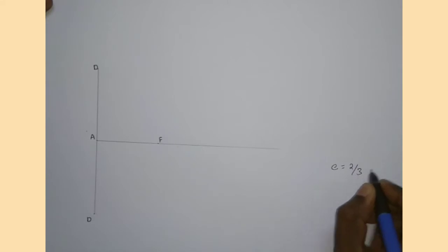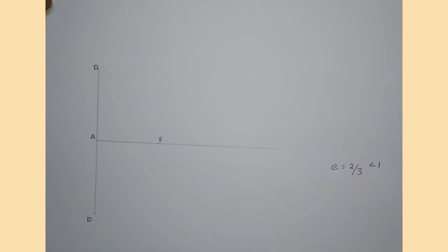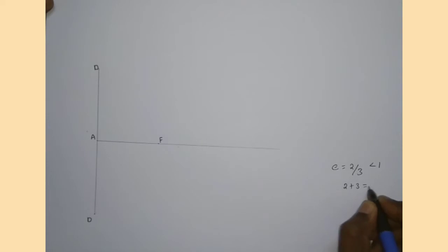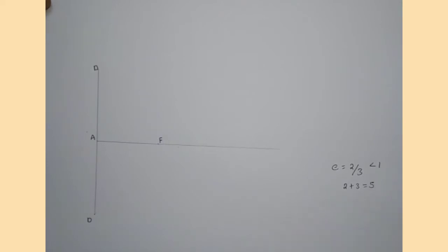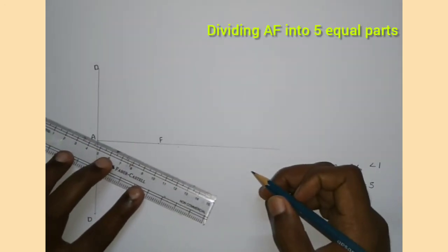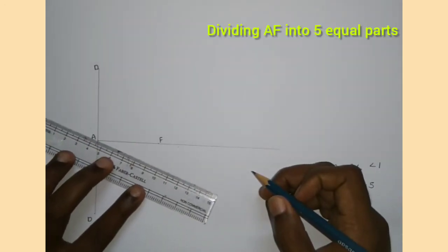Eccentricity of the ellipse is given, which is 2 by 3, which is less than 1. Eccentricity of the ellipse is always less than 1. I am adding 2 and 3, that is 2 plus 3 equals 5. Therefore, I am going to divide AF into 5 equal parts.